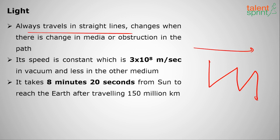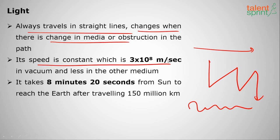Light always travels in straight lines; it will not travel in a zigzag manner. It changes its direction only when there is a change in medium or an obstruction. Its speed is always constant at 3 × 10⁸ meters per second in vacuum, and it is less in other mediums like solids, liquids, and gases.